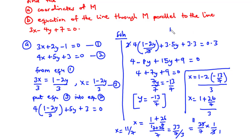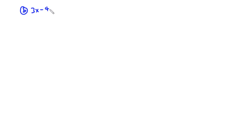Therefore the point of intersection M is (11/7, negative 13/7). Now for part b, we find the equation of the line through M that is parallel to the line 3x minus 4y plus 7 equals 0. Parallel lines have the same gradient, so we first find the gradient of the given line.